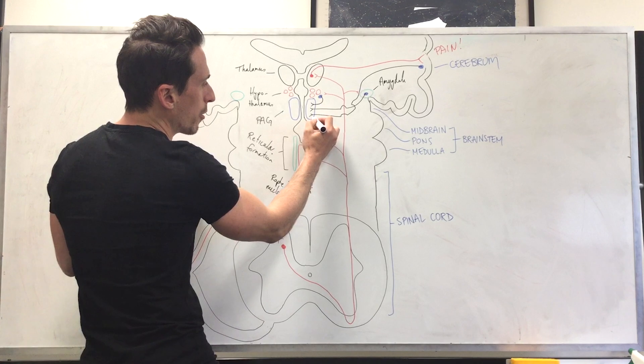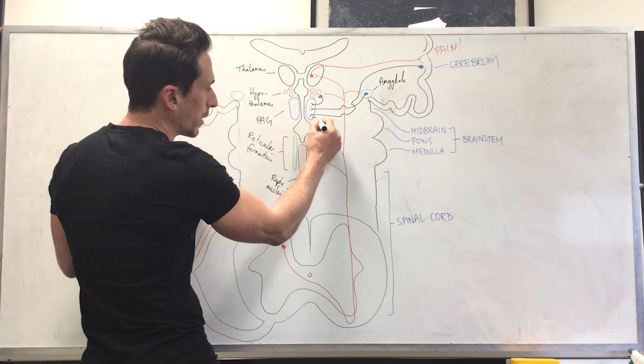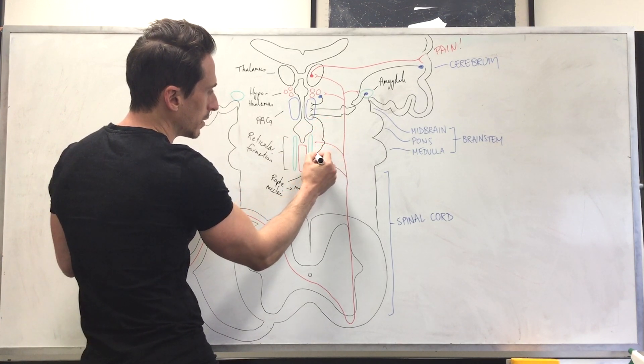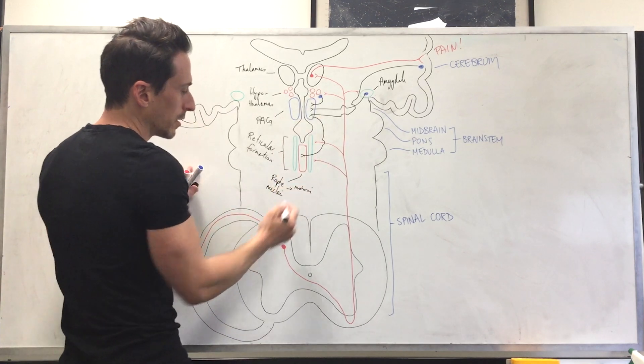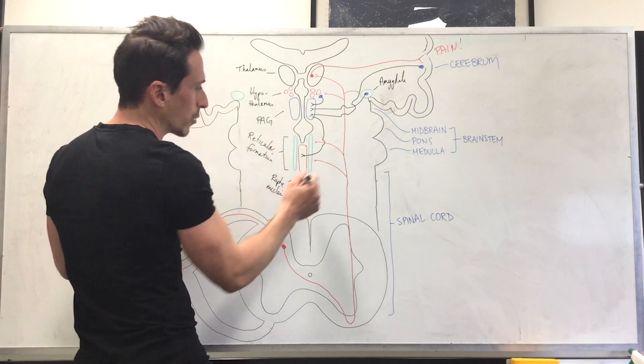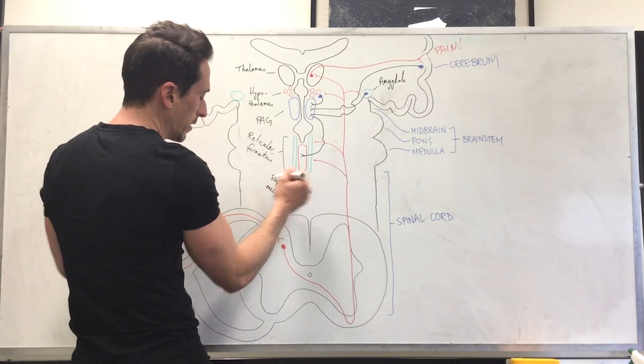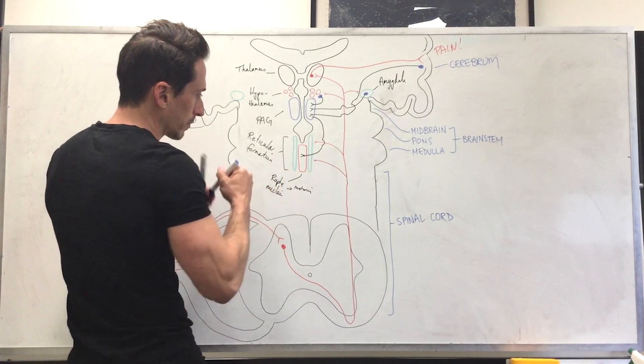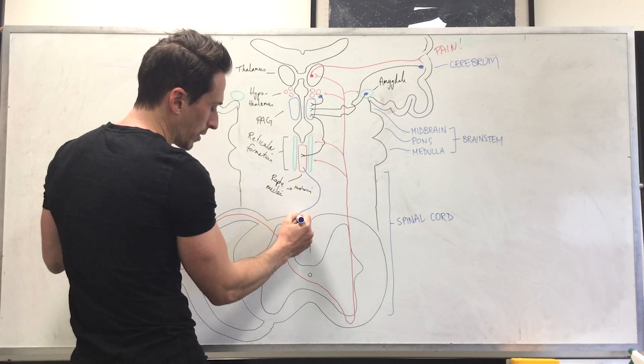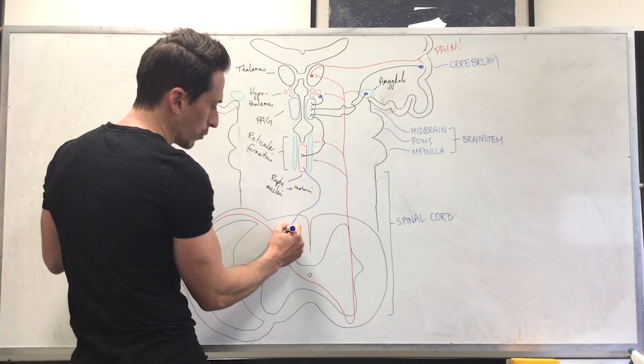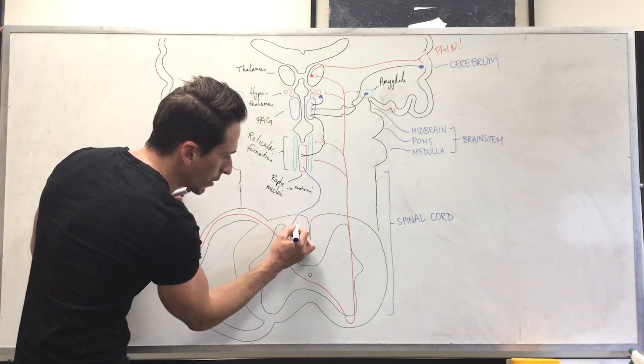Now, from the periaqueductal grey matter, we send a signal down. This signal stimulates the raphe nuclei and the raphe nuclei will send a serotonergic neuron down into the spinal cord. And what this serotonergic neuron will do is it will synapse. So it releases serotonin.